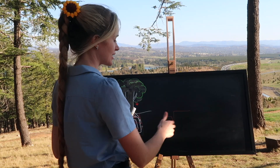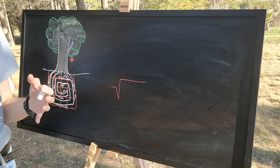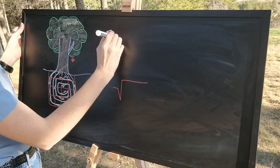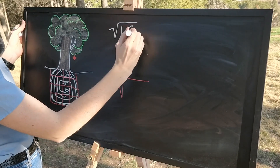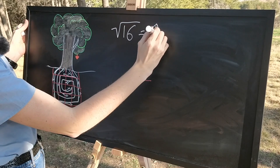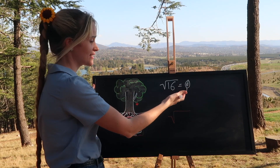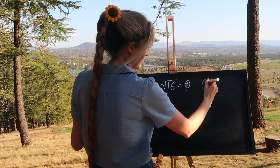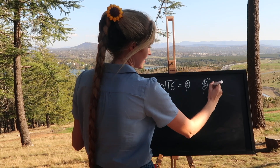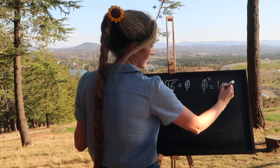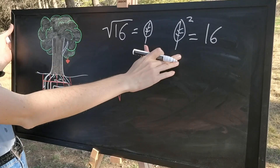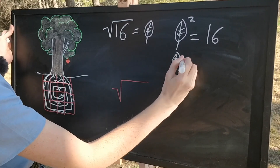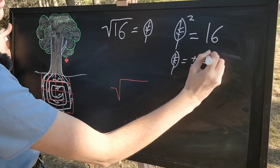The square root symbol typically means to just take the principal, or the positive, result of the square root. So there is only one leaf that would satisfy the square root of 16 equals leaf — only one solution. But if instead we had leaf squared equals 16, there are two leafs that would satisfy this and we would have to write our answer as plus or minus 4.